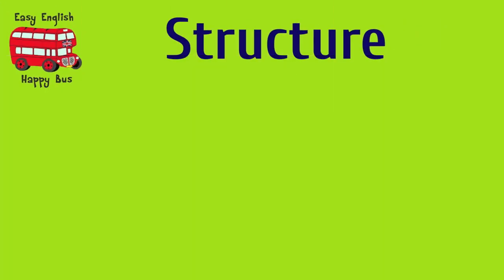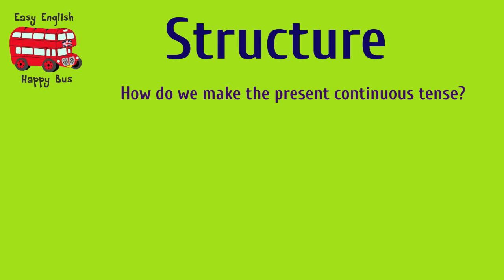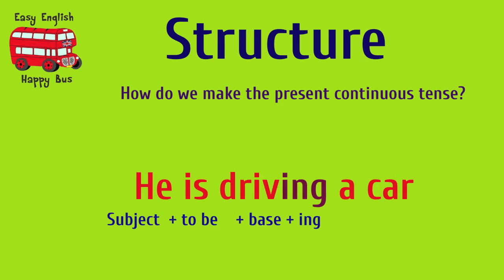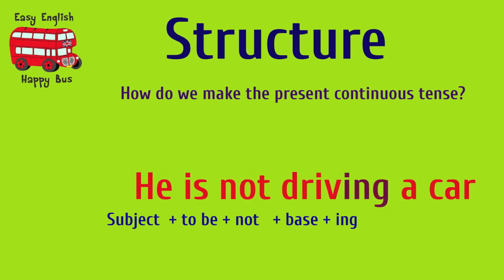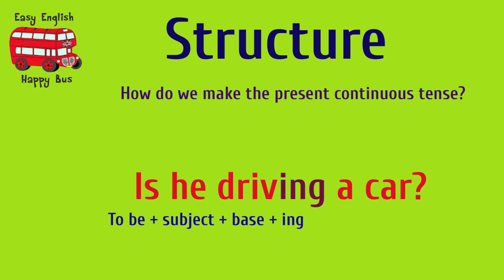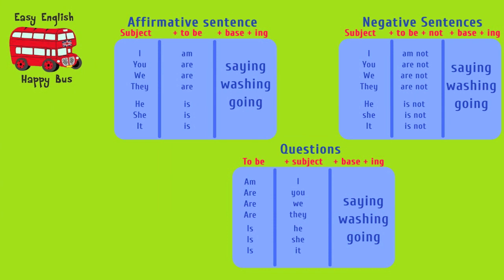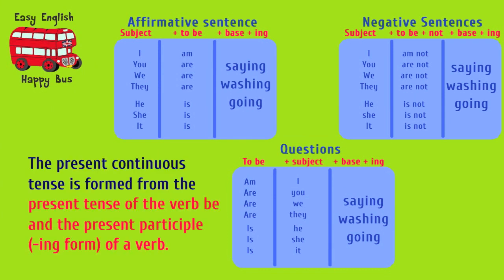Structure. How do we make the Present Continuous Tense? For example: 'He is driving a car.' Negative: 'He is not driving a car.' The Present Continuous Tense is formed from the Present Tense of the verb 'be' and the Present Participle form of a verb. Affirmative Sentence: